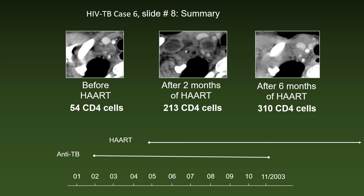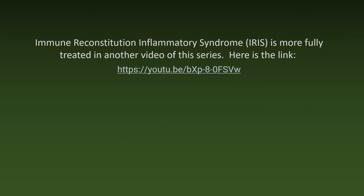This is a summary of case 1. On the left, a CT scan before start of all therapy. In the middle, the CT scan after two months of HAART plus anti-TB treatment. On the right, the appearance at the end of anti-TB treatment, with an increase in CD4 cells between the start of HAART and two months later from 54 to 213. Immune reconstitution inflammatory syndrome, or IRIS, is more fully treated in another video of this series.